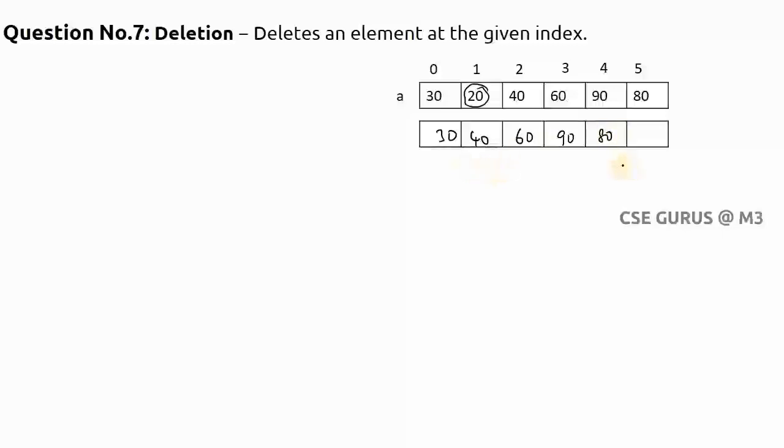And the size of the array will be reduced by 1. So previously the size is 6, now the size is only 5, where the index starts from 0 up to 4. So this is what we will see, how to write the logic for this.